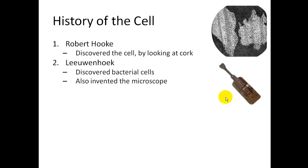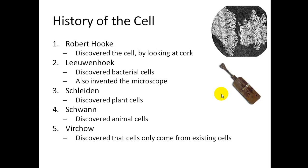The third scientist is Schleiden. He discovered that all plants are made of cells. Schwann discovered that all animals are made of cells. And Virchow is the last one. He discovered that cells can only come from existing cells. So you've got five scientists to know: Robert Hooke, Leeuwenhoek, Schleiden, Schwann, and Virchow.